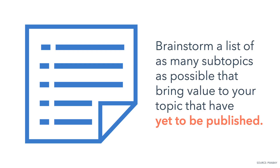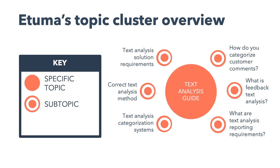Brainstorm a list of as many subtopics as possible that bring value to your topic that have yet to be published. Once Etuma made a comprehensive list of subtopics, they narrowed it down to six of the strongest subtopics to repurpose and expand upon to create their pillar page. Remember, you can continue growing and improving the authority of your topic cluster over time, so having a list of subtopics already identified makes that process easier. That comprehensive list is the content gift that keeps on giving.